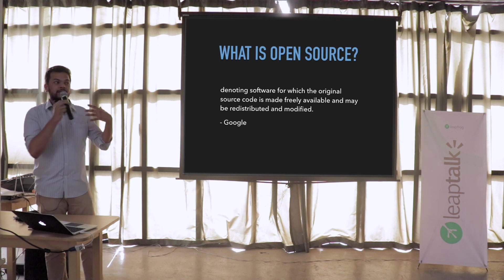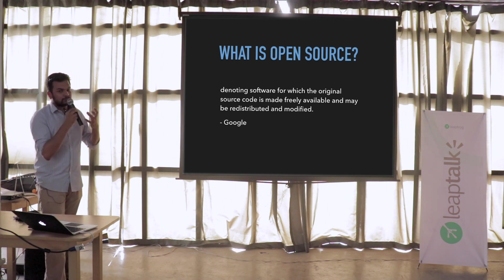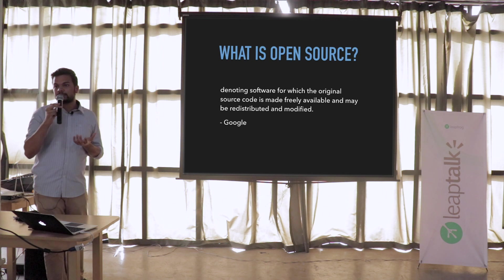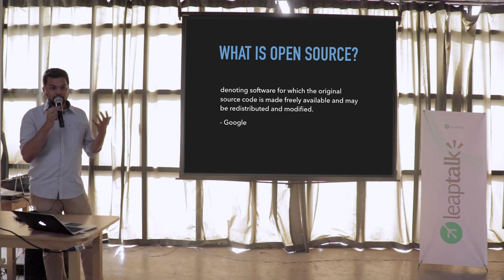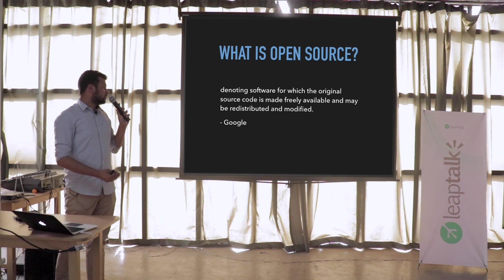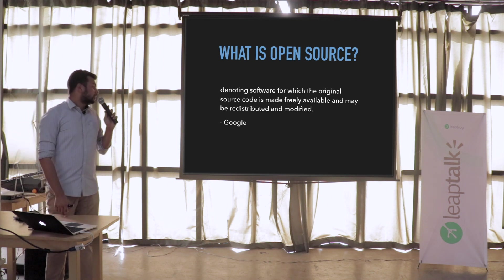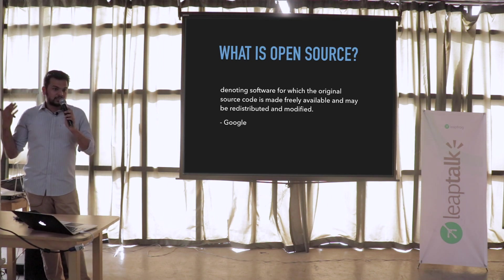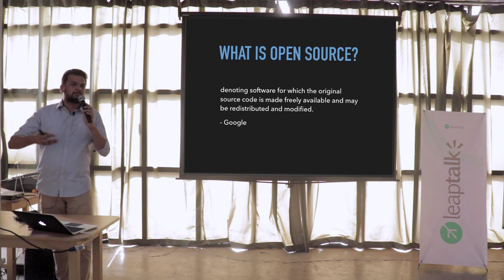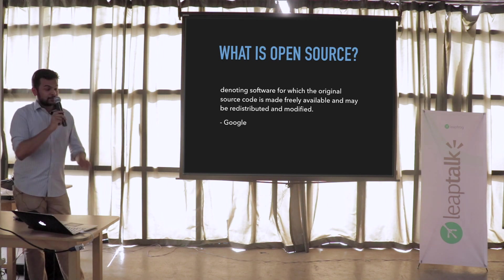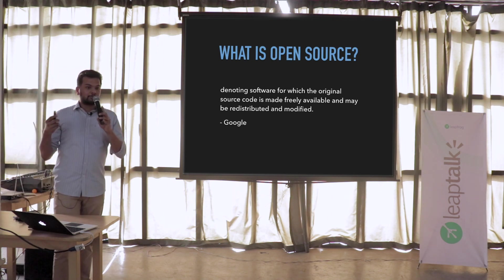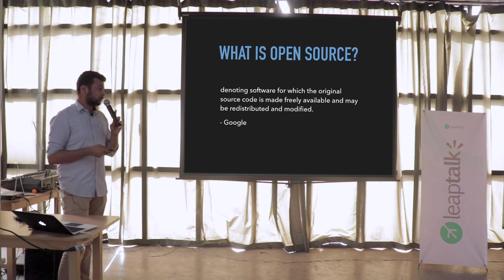If people had problems they could fix it, or extend it, or improve it. That was the original idea from which open source started. Some of you might know people like Richard Stallman who was behind GNU Linux and Linus Torvalds who started Linux, who really pushed this open source revolution. But this definition is a bit misleading because it deals more with redistribution — what it means to be free. Some of you might have heard that open source is free like in free speech, but not free like in free beer, and those are two different things.